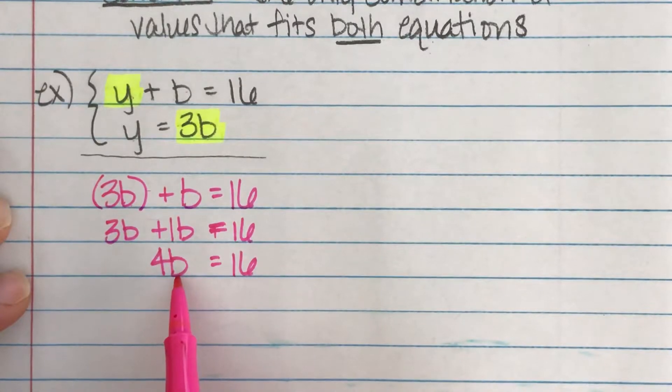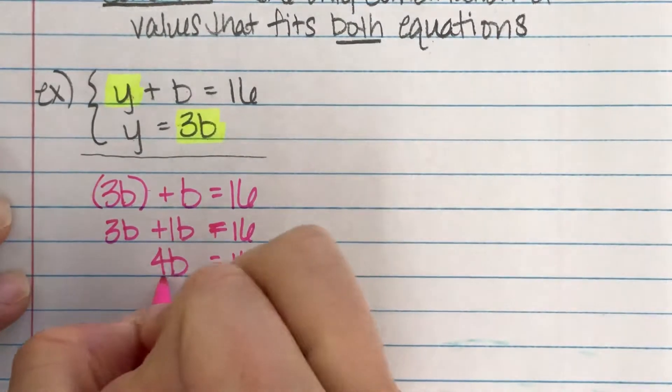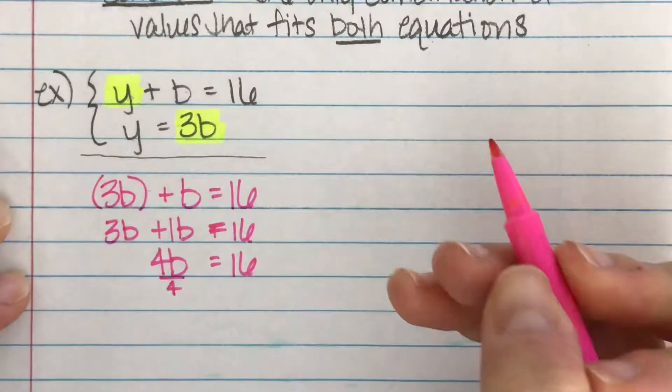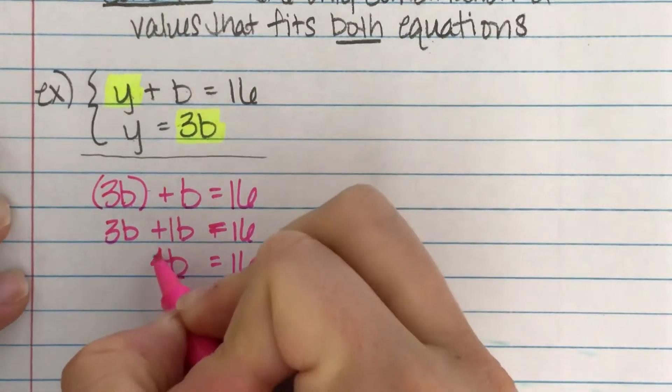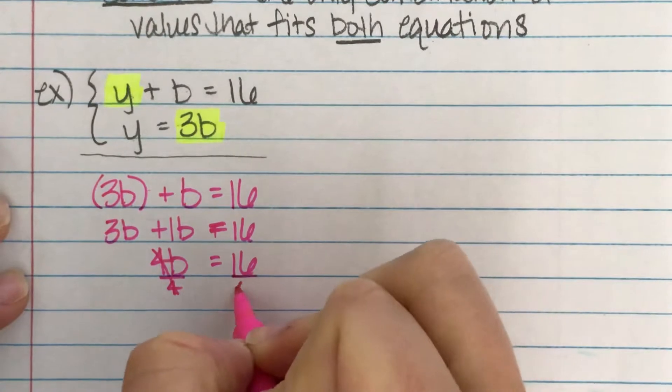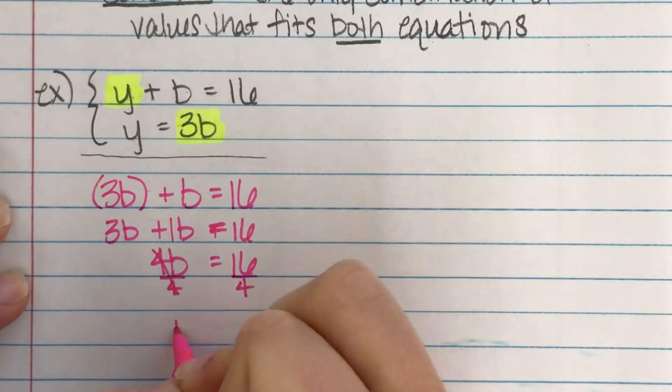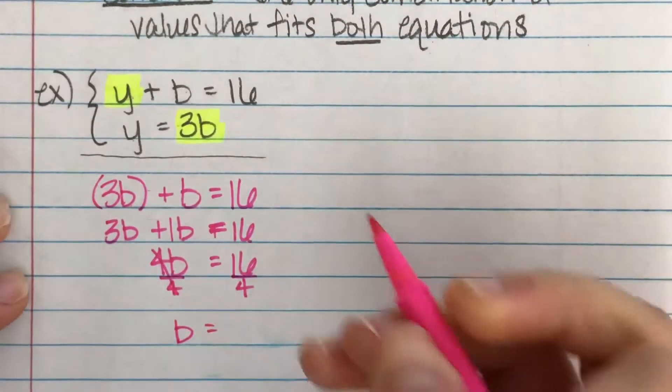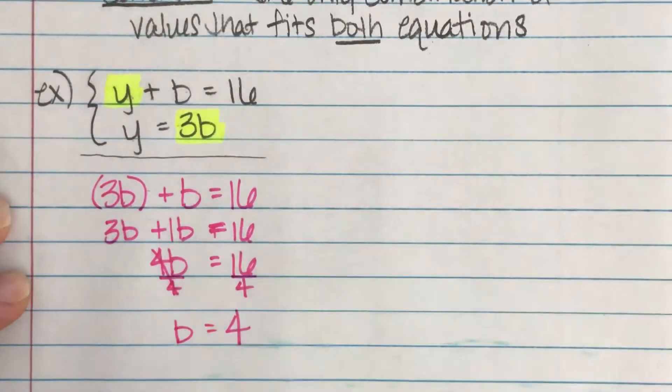If I think 3b plus 1b is 4b equals 16. And then if I'm trying to figure out what b is, I want to isolate b. So to cancel out a four, I'm going to divide by four because it's times four. So I'm going to do the inverse, which is to divide by four.